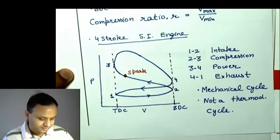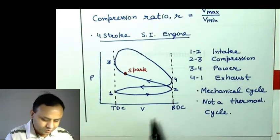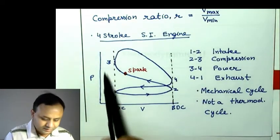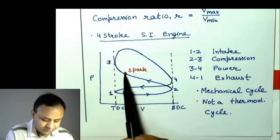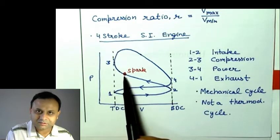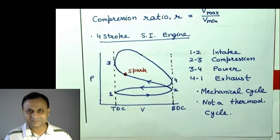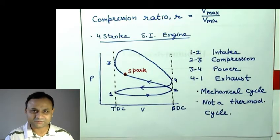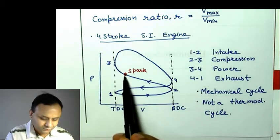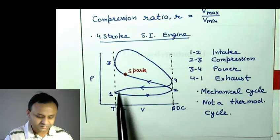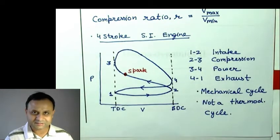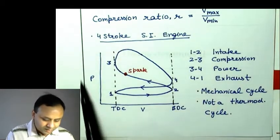In a compression ignition engine, the process looks similar but instead of a spark, fuel injection begins at the point where temperature is high enough due to compression. The fuel auto-ignites — no external spark is needed. Energy is released and the PV diagram looks similar to the SI engine.